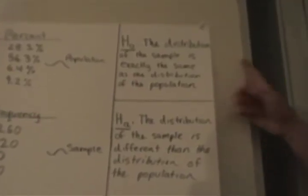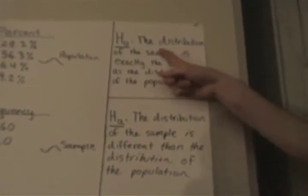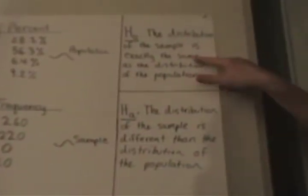So these are our hypotheses. This is our null hypothesis, and this is our alternative hypothesis. So our null hypothesis is going to be the distribution of the sample, which is this, is exactly the same as the distribution of the population, which is this. And we're trying to reject our null hypothesis.